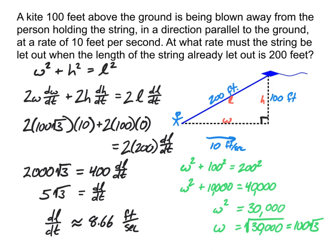And so we should be letting out about 8.66 feet of line every second if we're going to be trying to keep this kite at a height of 100 feet.